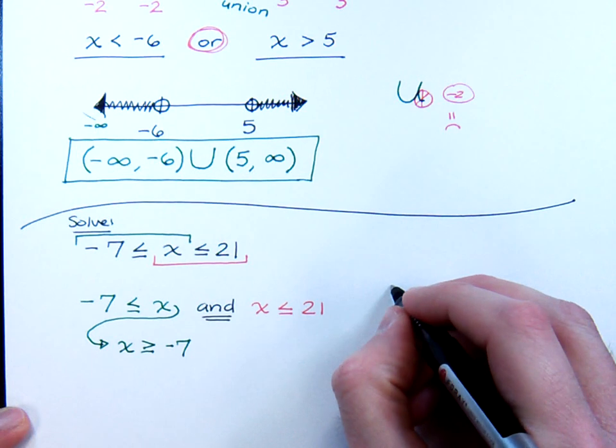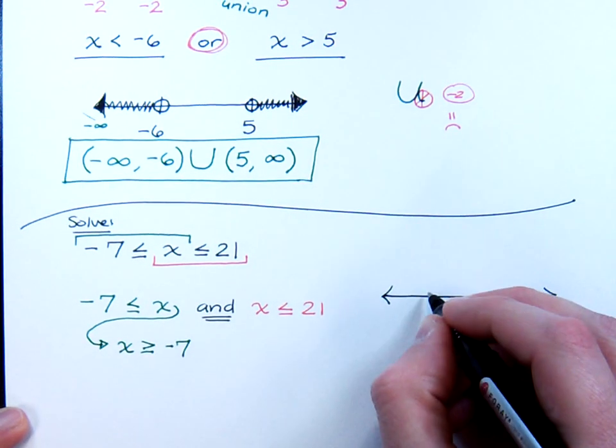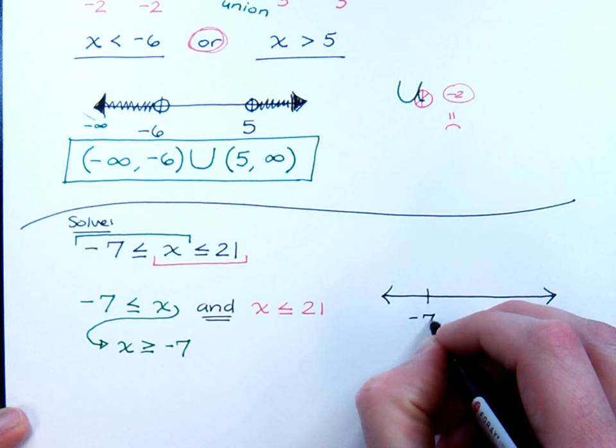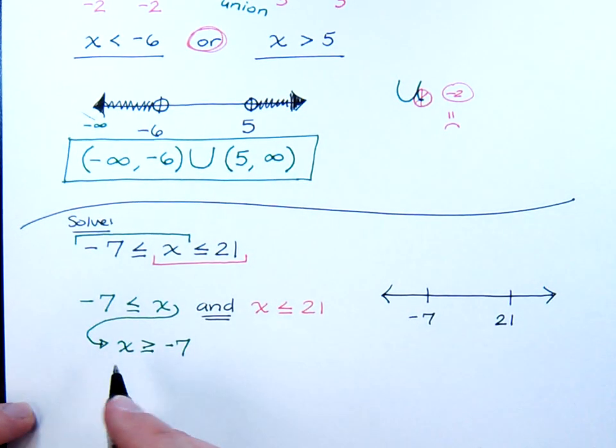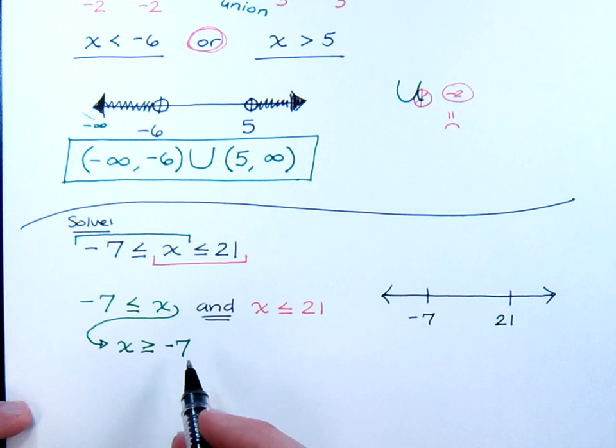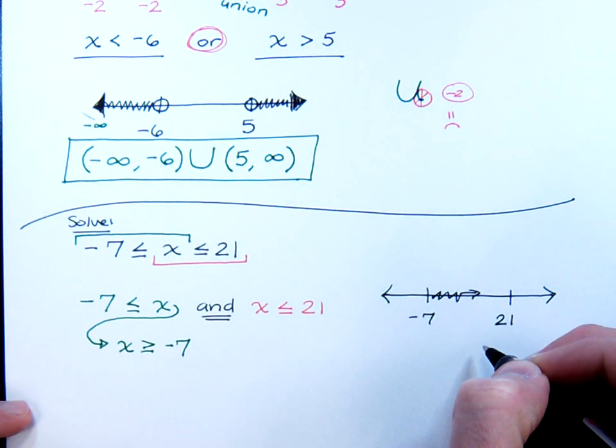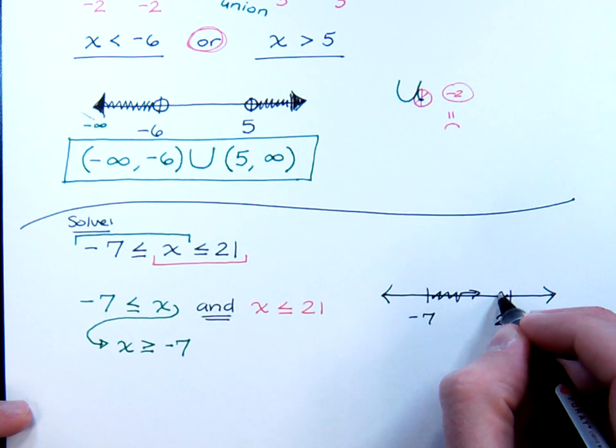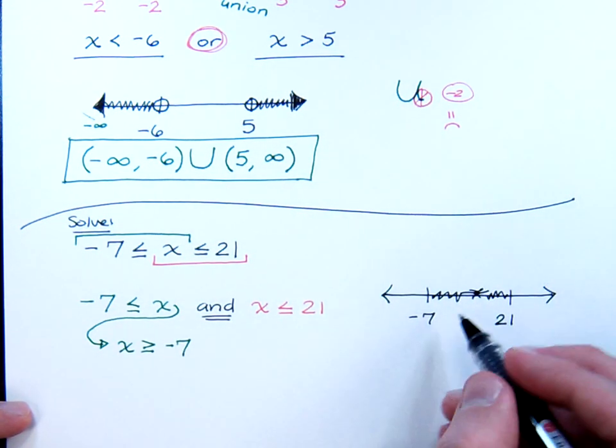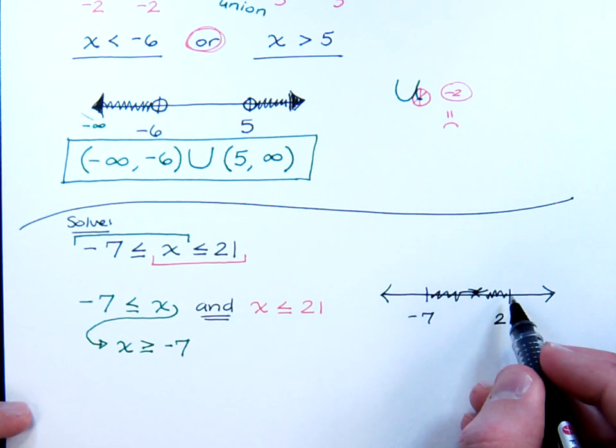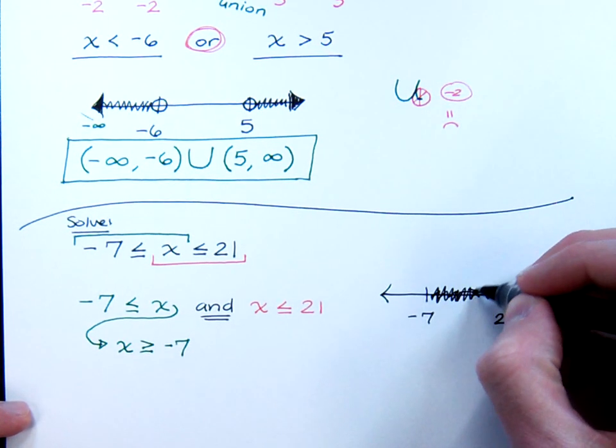Okay, when I graph this guy, the numbers I'm concerned with are negative seven and positive 21. You have to be greater than or equal to negative seven, so think about it. You have to be greater than negative seven, you also have to be less than 21. So where are you greater than negative seven and less than 21? And it's going to be all of the stuff that's in between these two numbers.